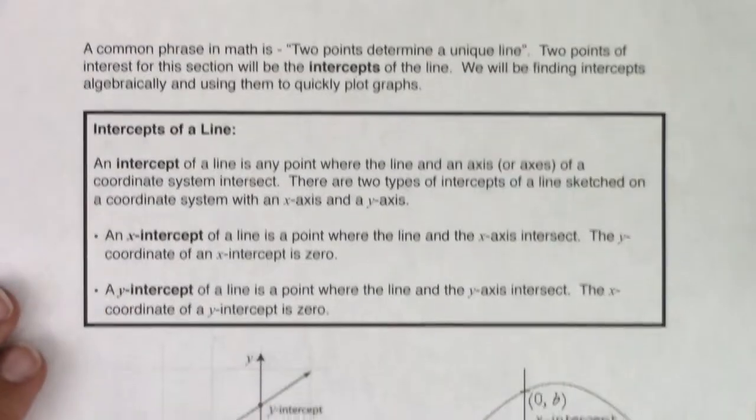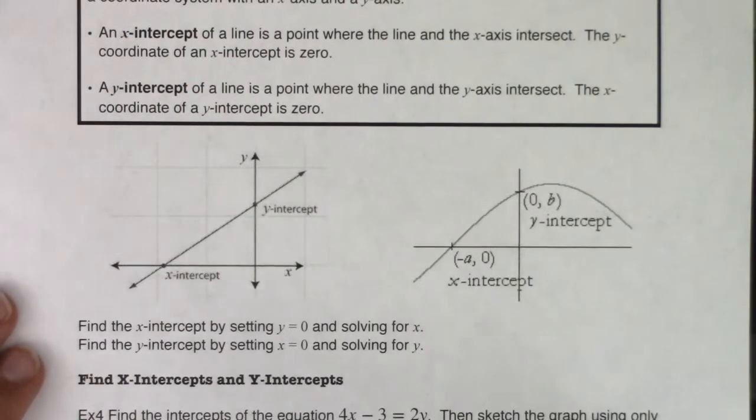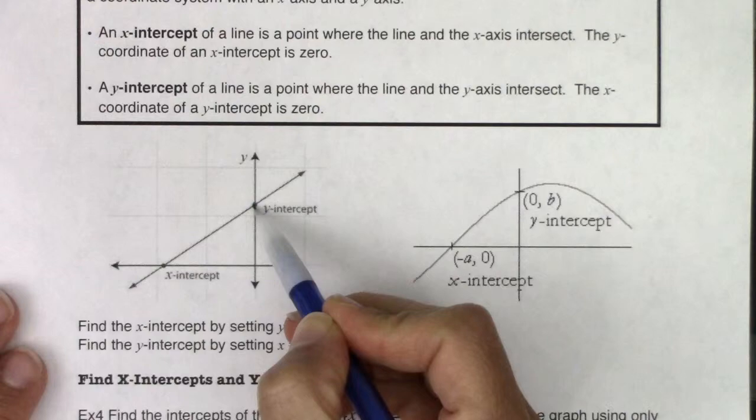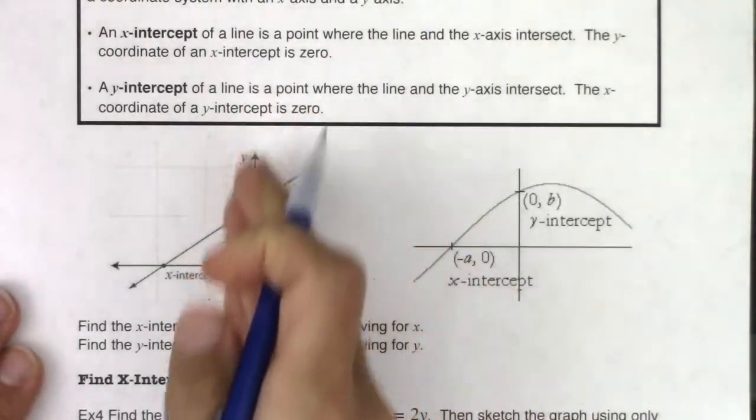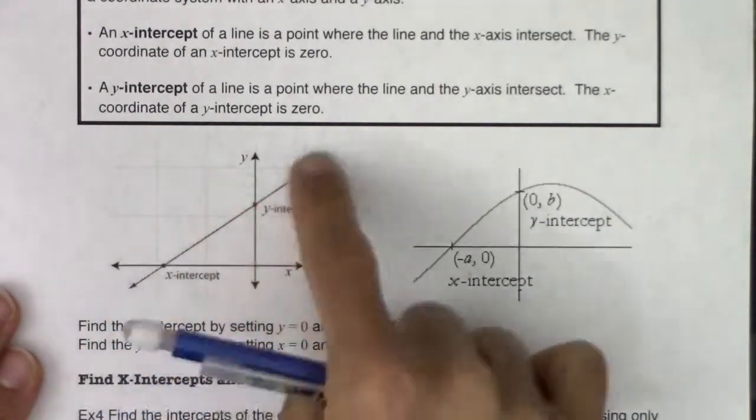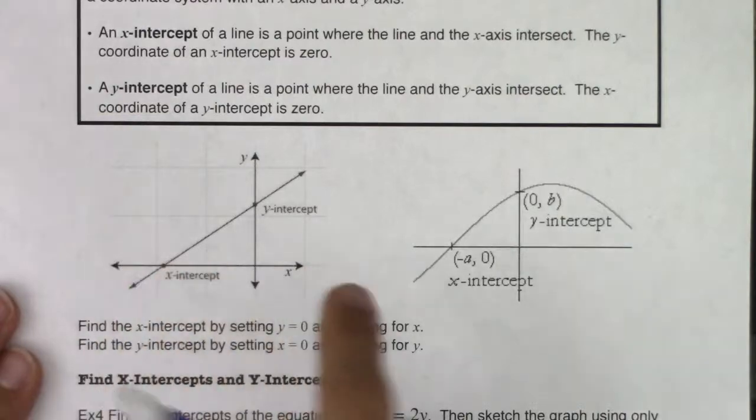Let me show you a couple of graphic representations of these intercepts. If this was a line, you can see here your y-intercept. The line is intersecting with the y-axis, where over here on your x-intercept, our line that we are graphing is intersecting the x-axis.